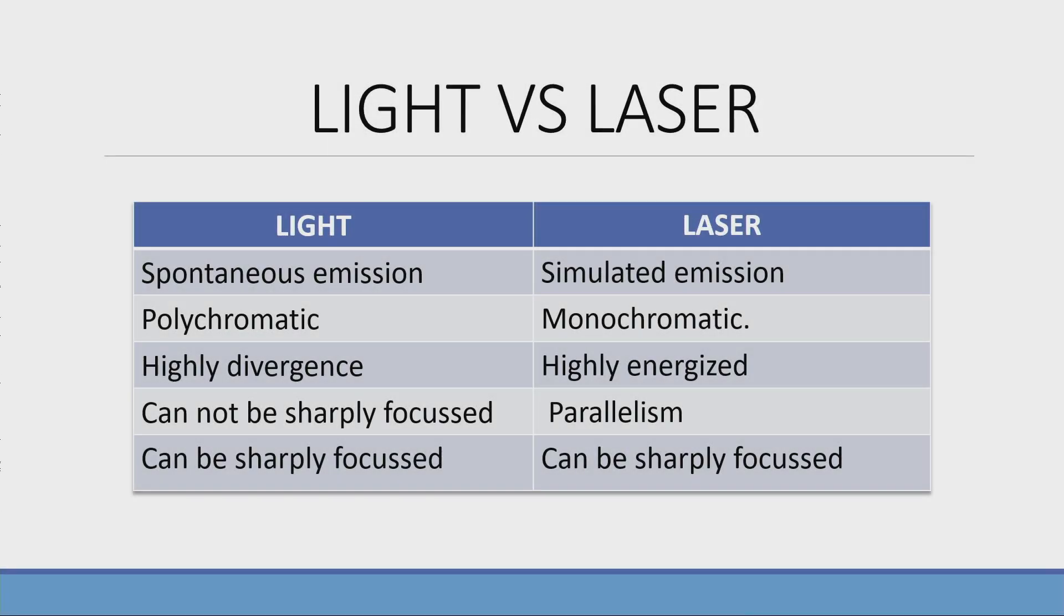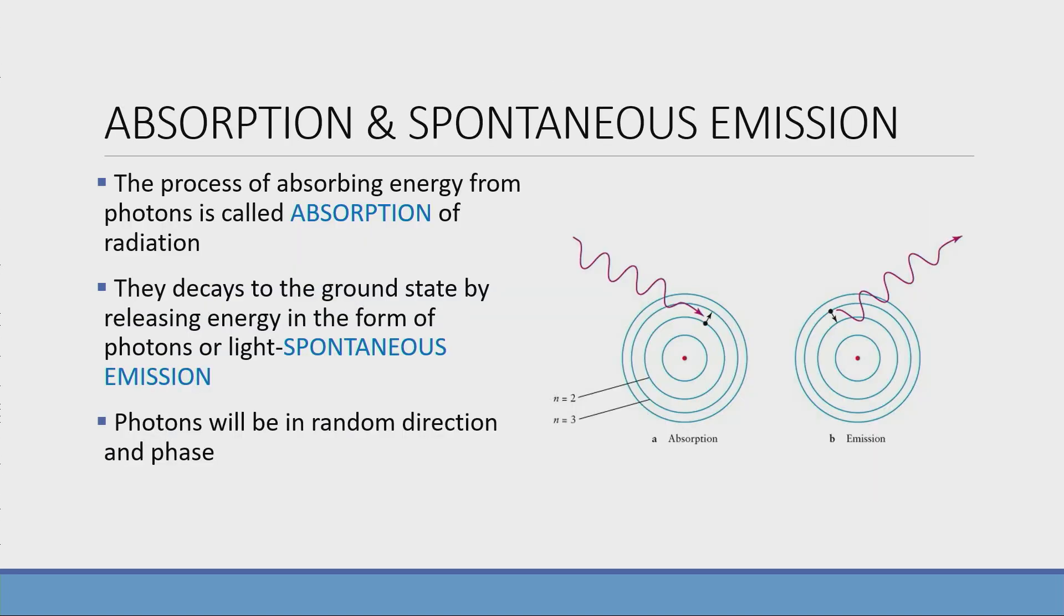This is the difference between light and laser. Light is polychromatic and it has high divergence. Coming to the production of laser, we need to understand what is absorption and what is spontaneous emission.